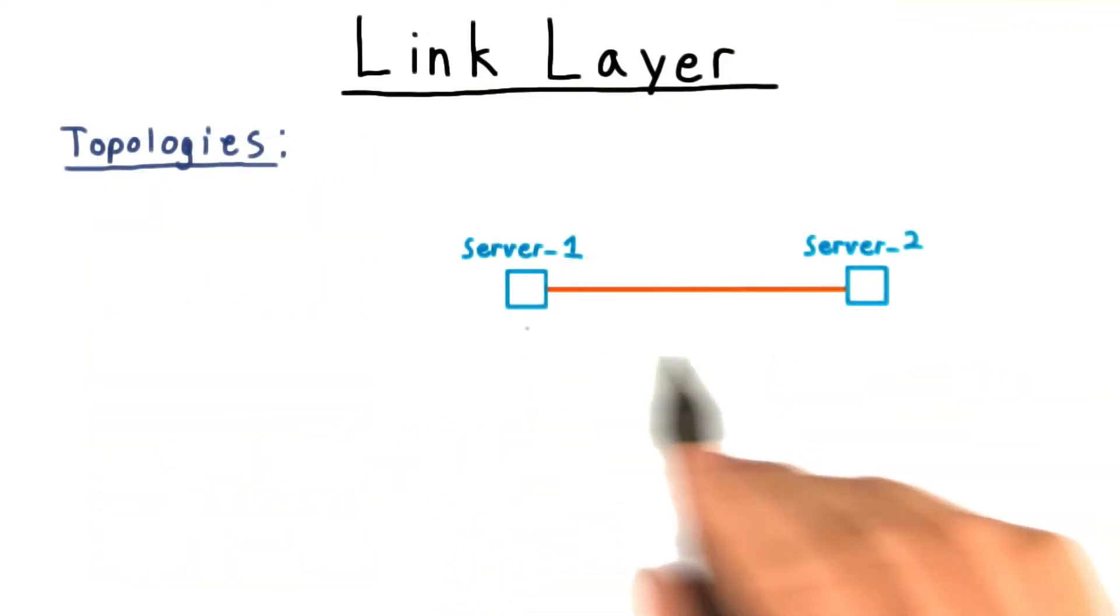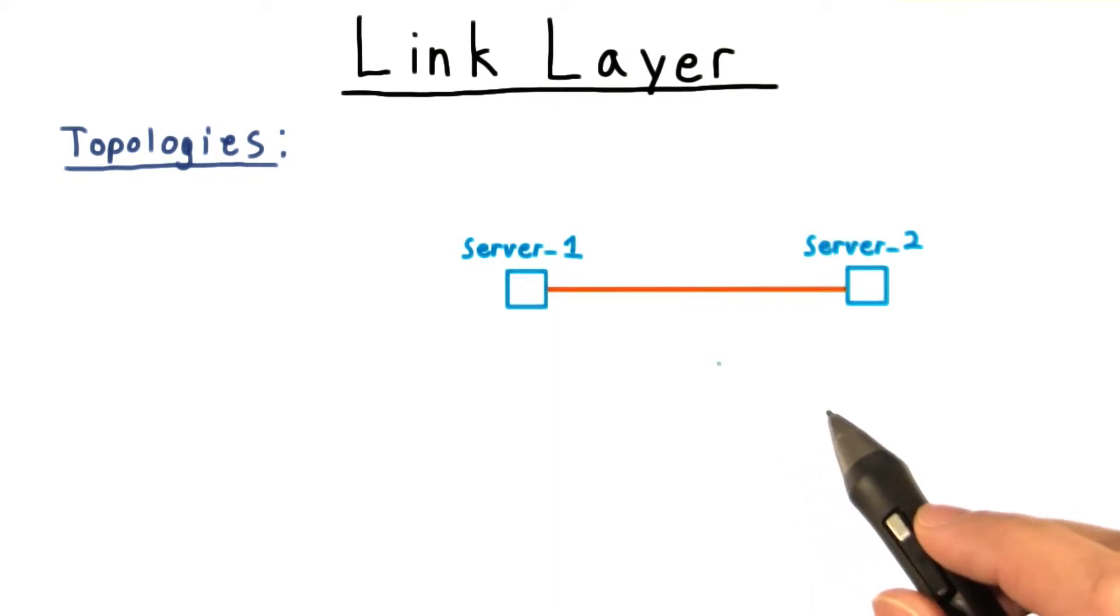Next, we move on to the link layer. If every link between computers were a dedicated permanent point-to-point connection, then once it was decided that two machines should communicate, it would be relatively straightforward to arrange for them to do so.